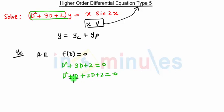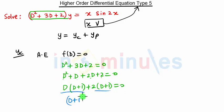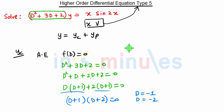From the first two terms we can take D common and we get D plus 1, and from the next two terms we can take 2 common and we get D plus 1 equal to 0. Now taking D plus 1 common from both terms, we get D plus 2 equal to 0. So the roots are D equal to minus 1 and D equal to minus 2.